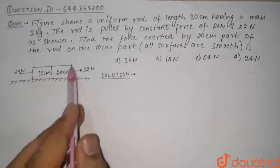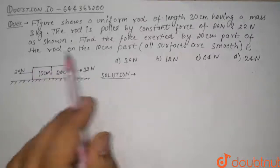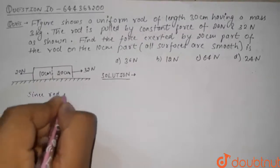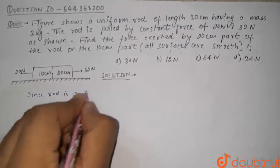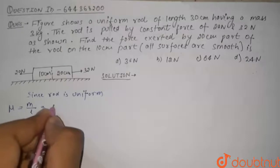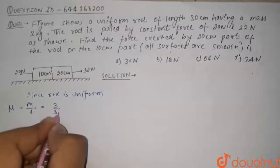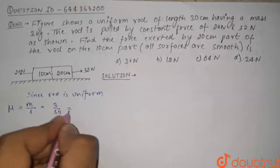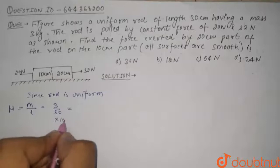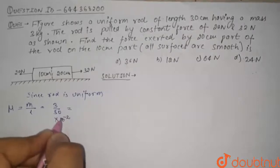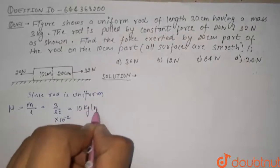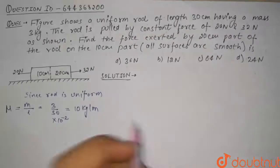In this question we are given that this 30 centimeter length rod has a mass of 3 kg and the rod is uniform. Since the rod is uniform, mass per unit length μ equals 3 divided by 30 centimeters, which converts to 10 kg per meter. This is our mass per unit length.